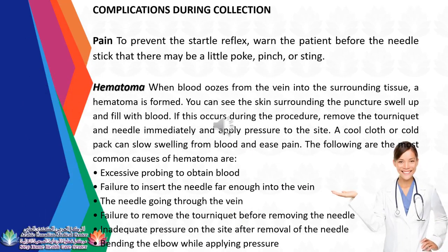Pain: To prevent the startle reflex, warn the patient before the needle stick that there may be a little poke, pinch, or sting. Hematoma: When blood oozes from the vein into the surrounding tissue, a hematoma is formed — you can see the skin surrounding the puncture swell up and fill with blood. If this occurs during the procedure, remove the tourniquet and needle immediately and apply pressure to the site. A cool cloth or cold pack can slow swelling and ease pain. Common causes of hematoma include excessive probing, failure to insert the needle far enough, the needle going through the vein, failure to remove the tourniquet before the needle, inadequate pressure after removal, and bending the elbow while applying pressure.